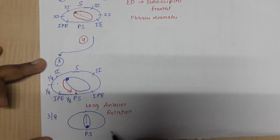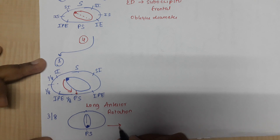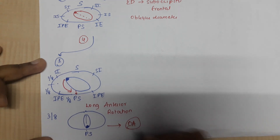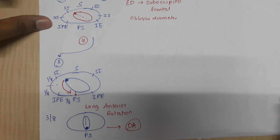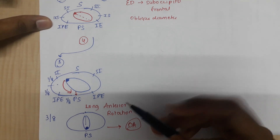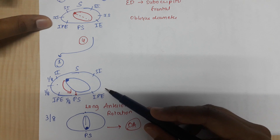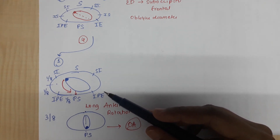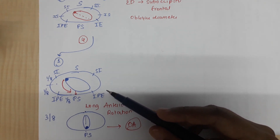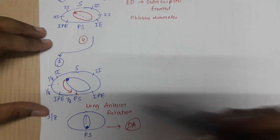Once long anterior rotation occurs, the fetus will deliver just like in occipitoanterior position. For this to occur, the fetal head must have a well-flexed attitude. This happens in 90% of cases.